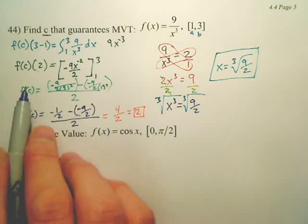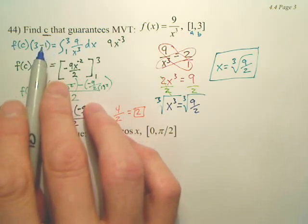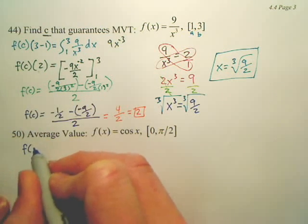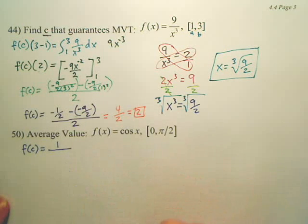All right, average value theorem is very similar to this one right here, except this b minus a gets thrown over. So it's basically average value, we're trying to find f of c. f of c is equal to 1 over b minus a.